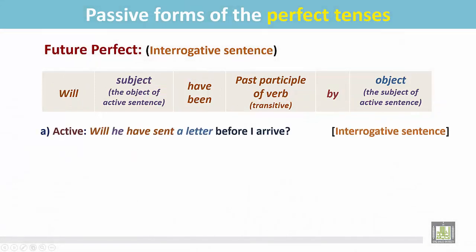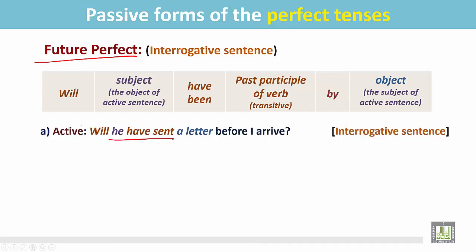See the examples. This is an active sentence in the future perfect in the interrogative form: 'Will he have sent a letter before I arrive?' In the sentence, 'he' has sent what? 'A letter' is the object of the verb 'sent'. Another verb, 'arrive', doesn't have any object.